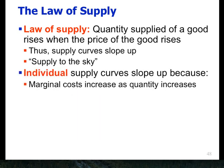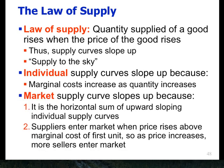Individual supply curves slope up because marginal costs increase as quantity increases. Market supply curves slope up both because they are the horizontal sum of upward-sloping individual supply curves, and because — like the Mercedes example on the demand side — as price goes up, some suppliers who were supplying nothing now enter the market. Think about a vacation lake house: at low prices you'd rather keep it, but as prices boom, you're willing to supply it to the market.